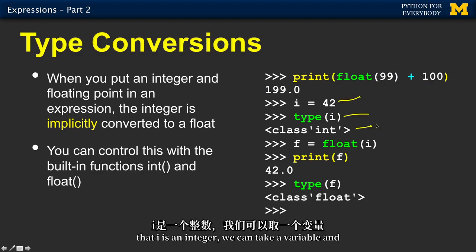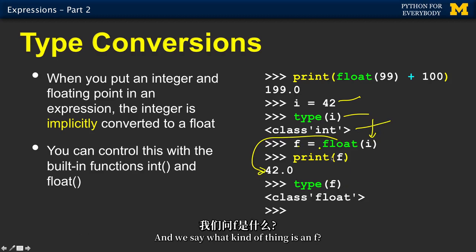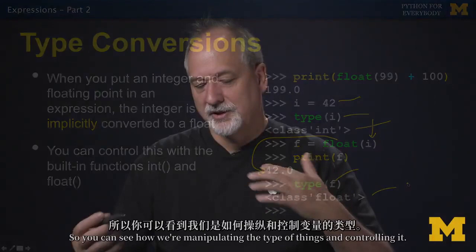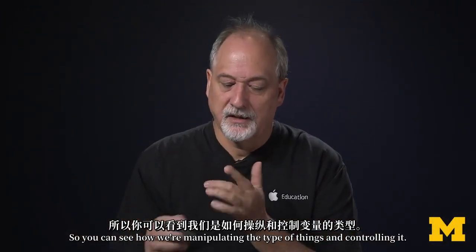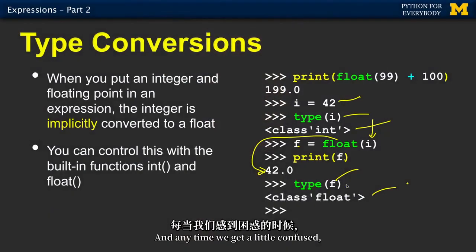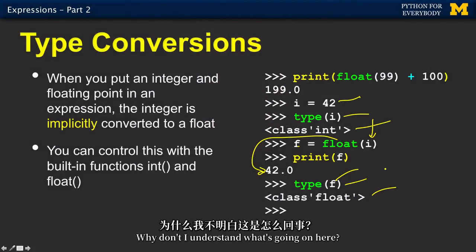If we look at like i is 42, we ask what type it is. Well, that i is an integer. We can take a variable and pass it into the float function and get back 42.0. That 42.0 comes back. And we say, what kind of thing is in f? Well, f is a float, right? So you can see how we're manipulating the type of things and controlling it. And any time we get a little confused, we use the type function and say, hey, what's going on here? Why don't I understand what's going on here?